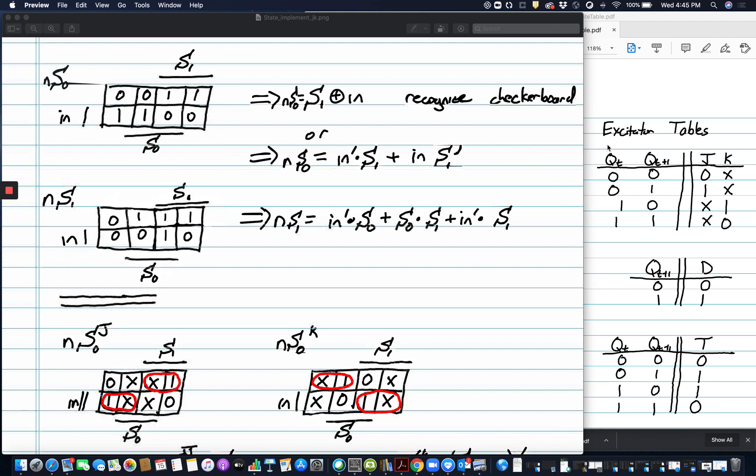On the right-hand side, you'll see the excitation table for the JK. It's the upper one of these. And you'll see we've got the current state, which is QT. The current state is the same right now for us in our design as this S0 and S1. If you notice on here, when my current state is a 0, the K value is an X. And when the current state is a 1, the J value is an X.